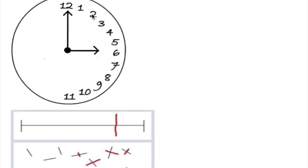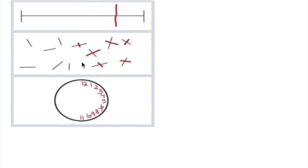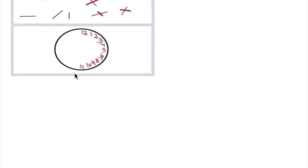Here in this picture, the patient wrote all the numbers on the clock on the right side — he didn't place any on the left. When asked to bisect a line, he cut at the center of the right half of the line. In the second example, he cut lines only on the right side and couldn't cut the lines on the left side of the picture.